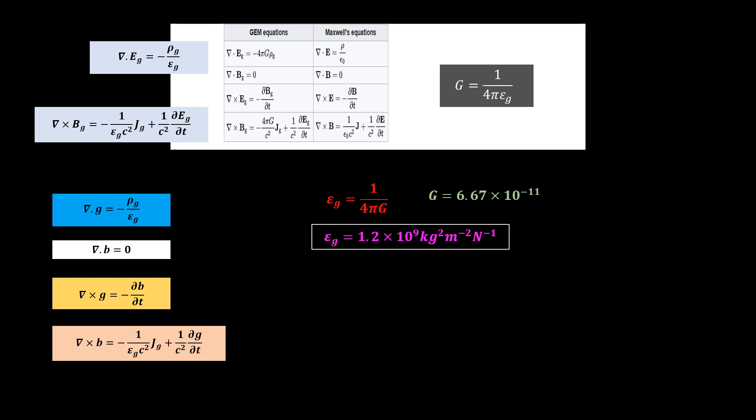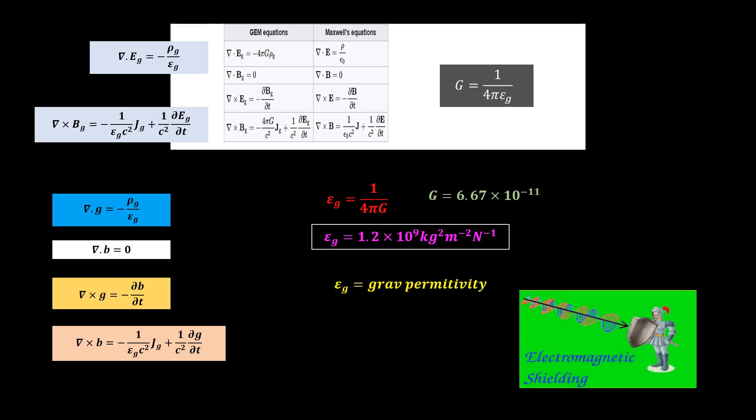This makes epsilon g equal to 1.2 exponential 9 kilogram squared per meter squared per newton. What then does epsilon g represent physically? This obviously should be the gravitational permittivity since gravitational fields are similar to electric fields. Gravitational permittivity can thus be defined as the extent to which gravitational fields can be impeded.